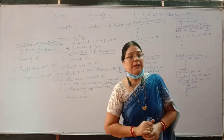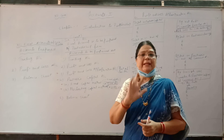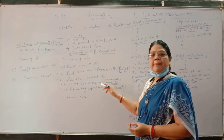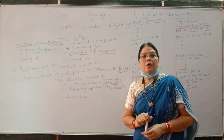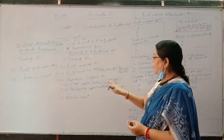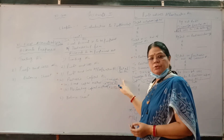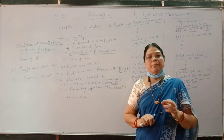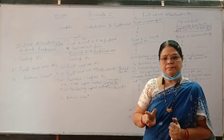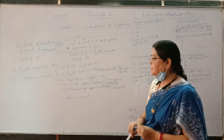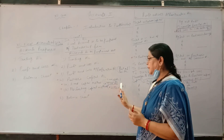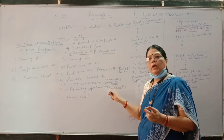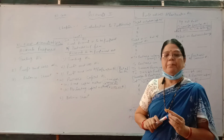Partners capital is maintained by two methods. The first method is fixed capital method, in which we are going to prepare a fixed capital account and current account — meaning we prepare two accounts. The second method is fluctuating capital method, in which only one account is to be prepared.